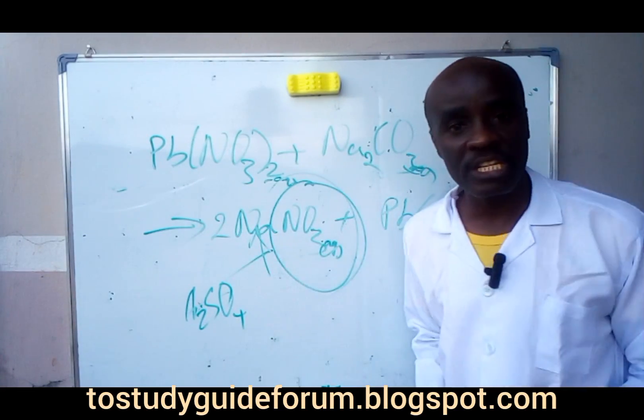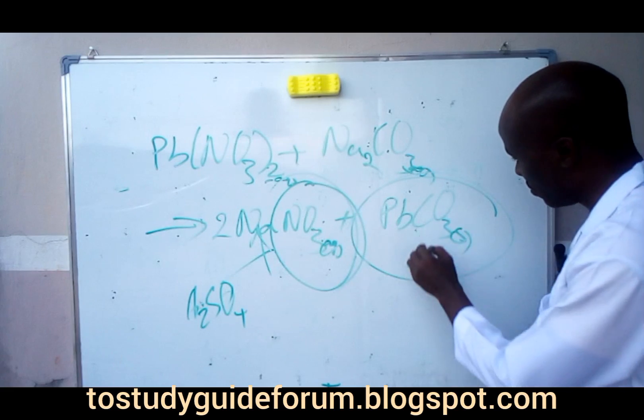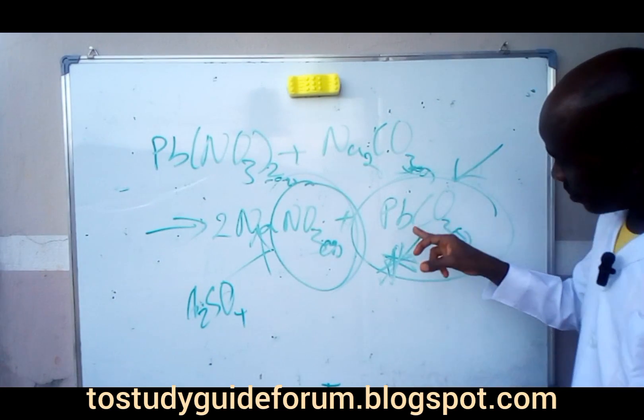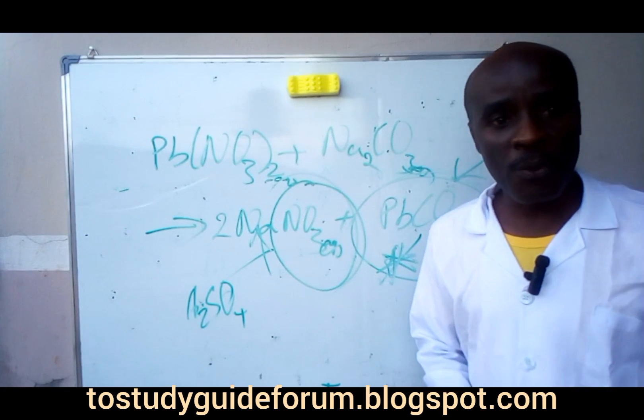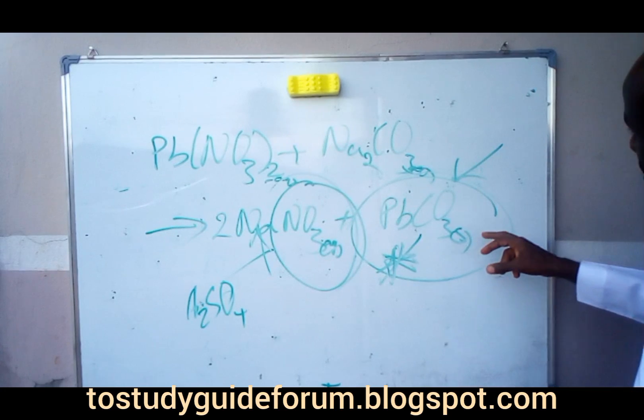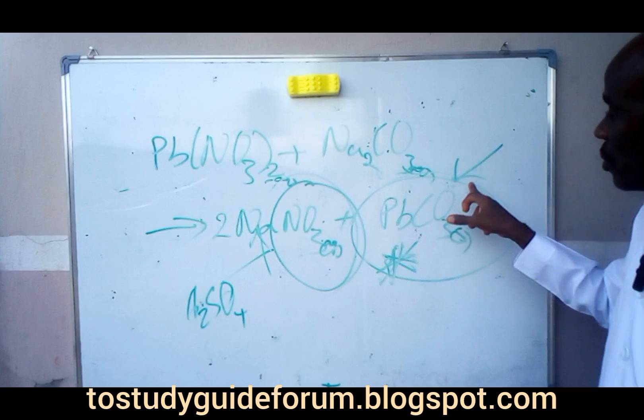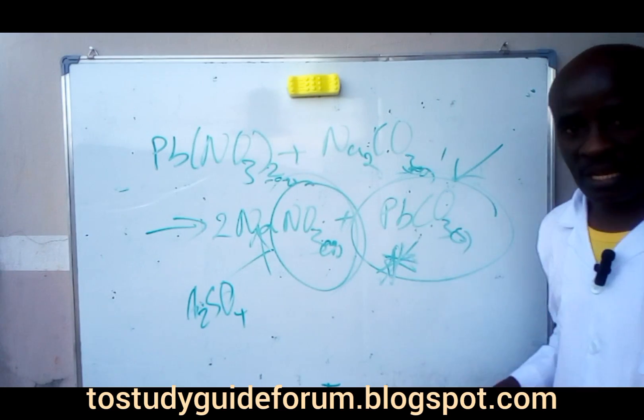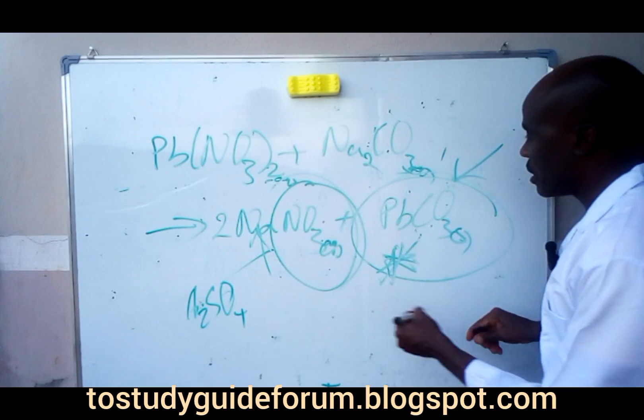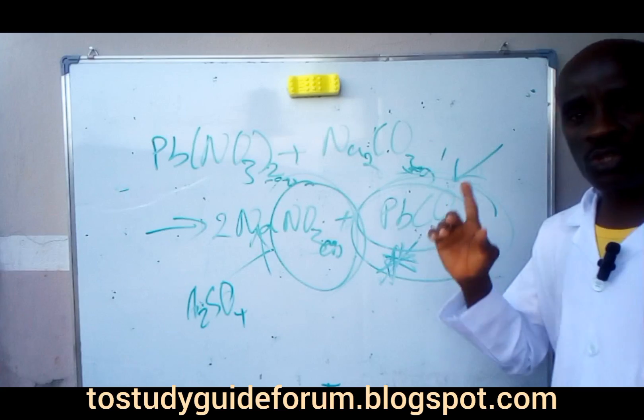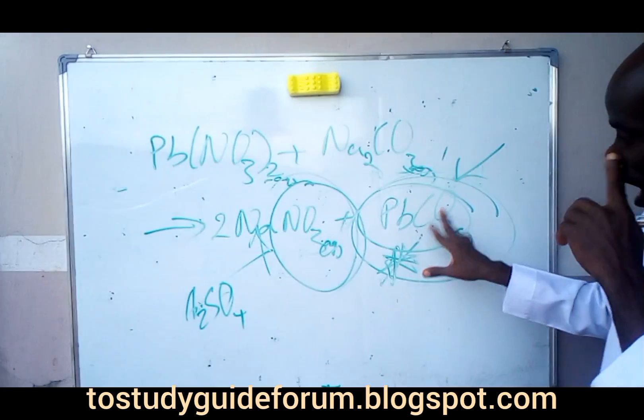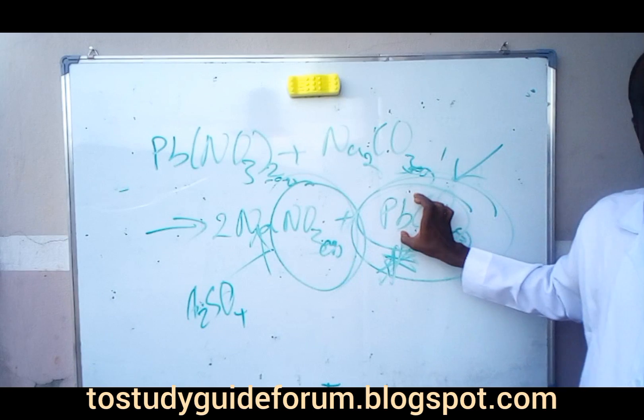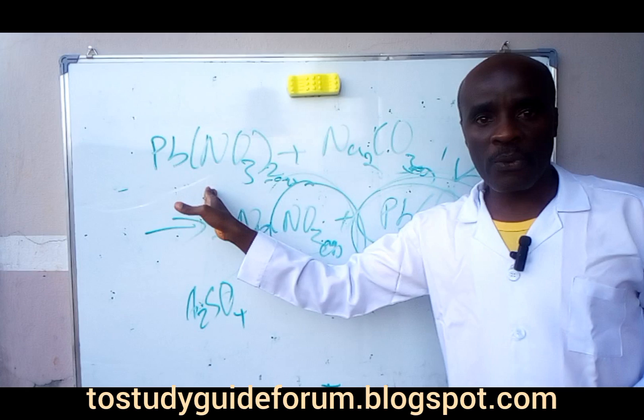To test for this carbonate, you will need dilute trioxonitric acid. On adding trioxonitric acid, carbon dioxide will be liberated which will be tested with lime water, which will turn lime water milky. To test for lead, we can do this in several ways. You can do that with potassium iodide which will give you yellow precipitate of lead iodide, or you can do it with aqueous ammonia which will give you white gelatinous precipitate which will be insoluble in excess.